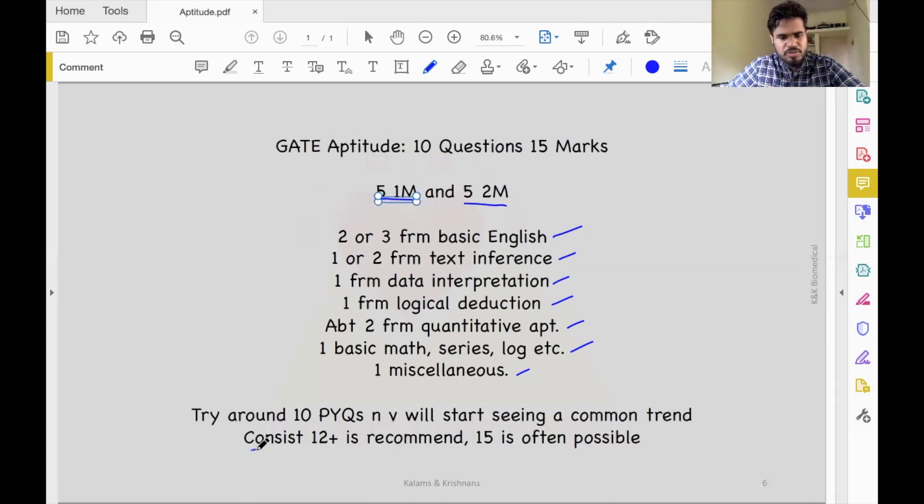It's recommended that you score consistently 12 plus in all the mock tests you give. 15 is often possible and highly recommended. But get to a stage where you consistently get 12 plus in the GATE aptitude section. Once you are here, you pretty much get half of the marks required for the cutoff.